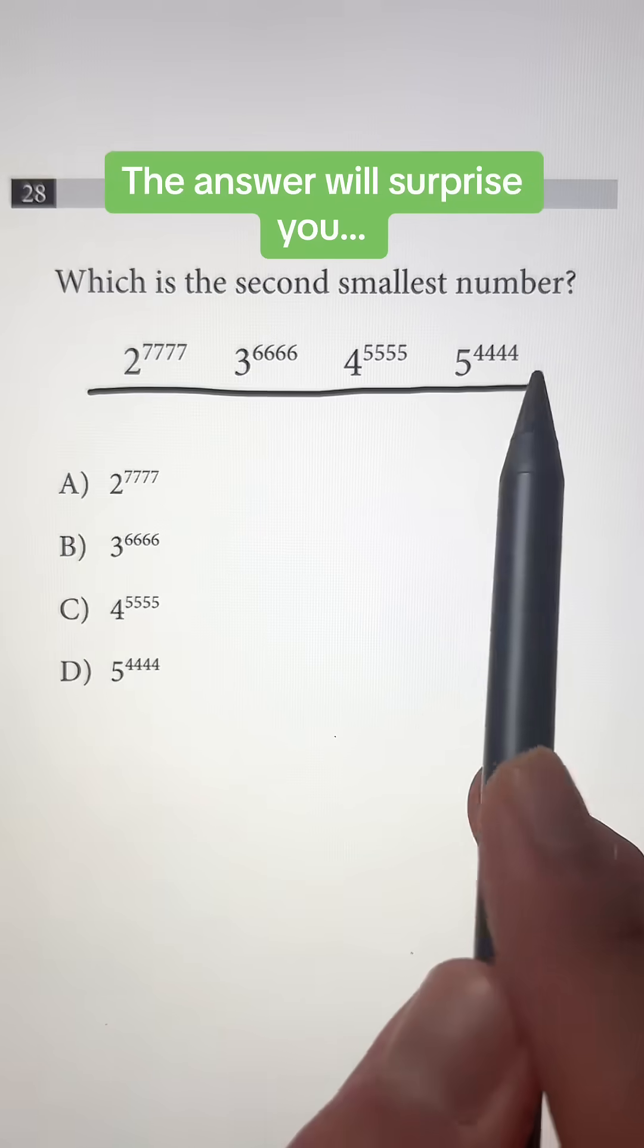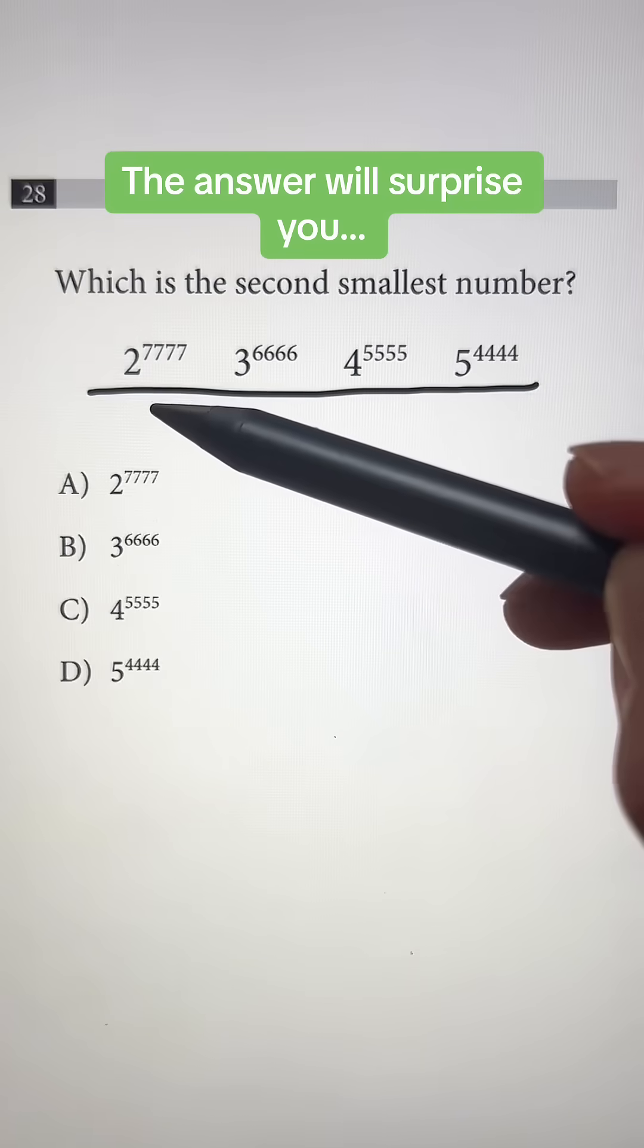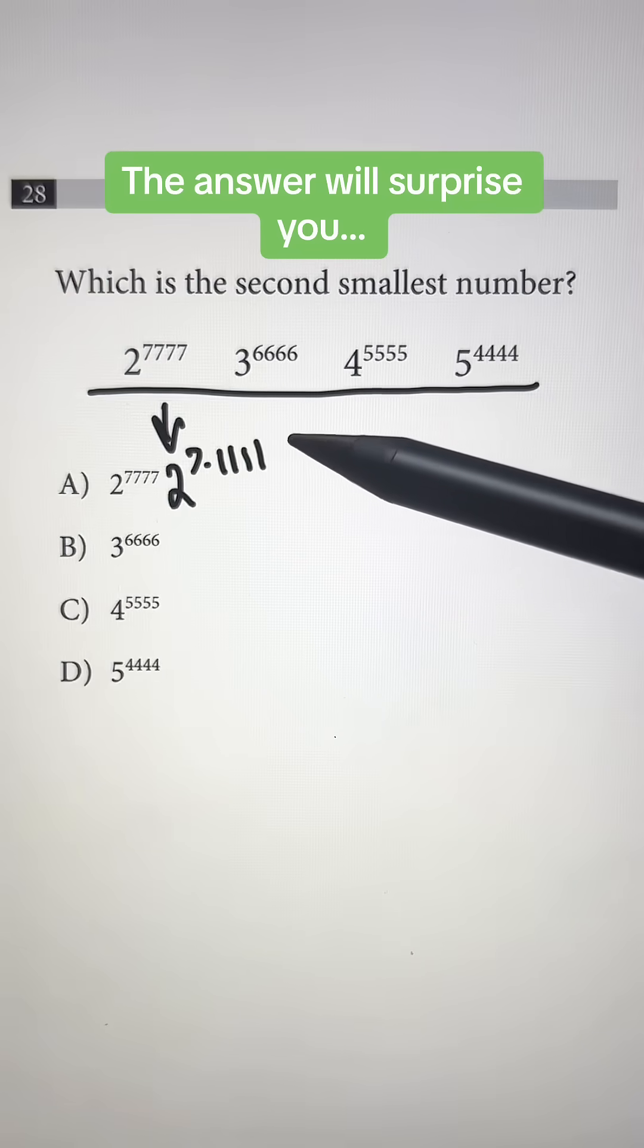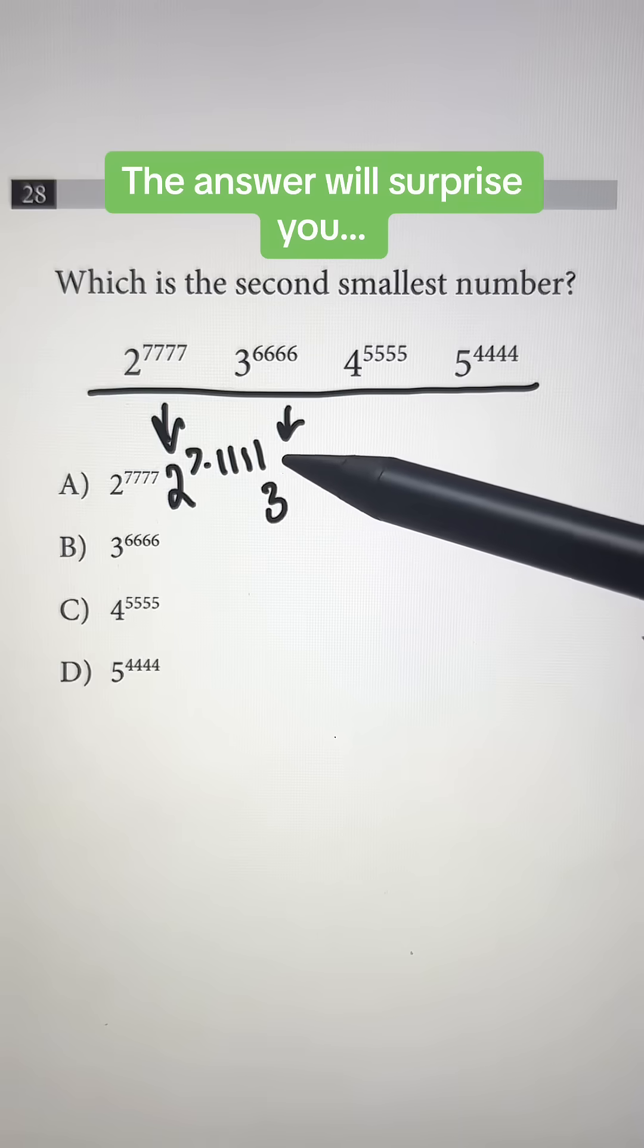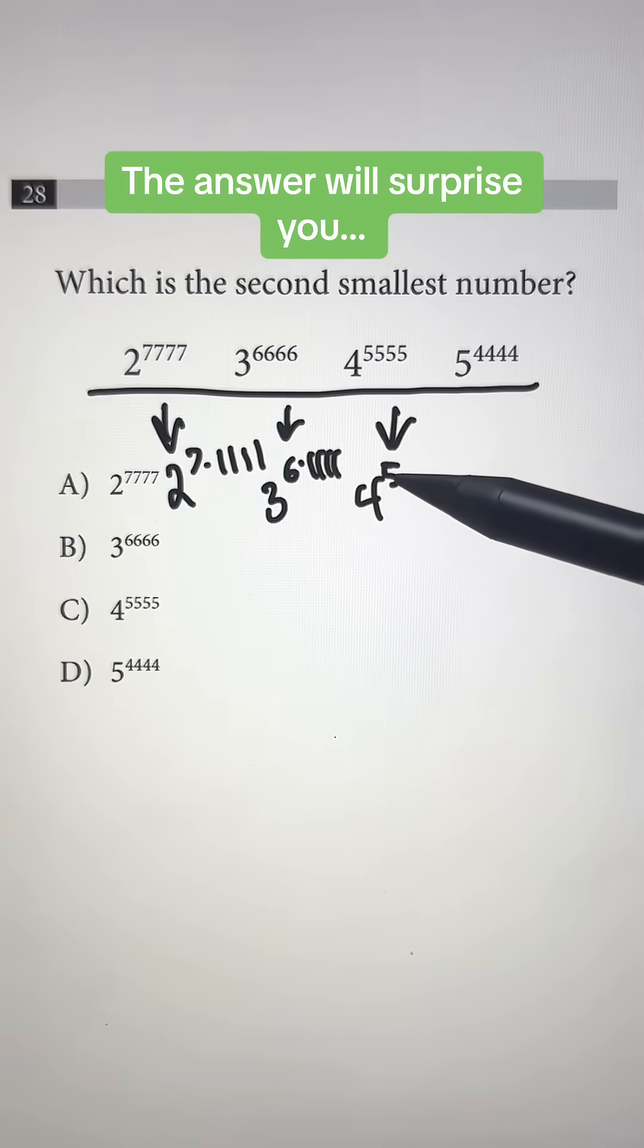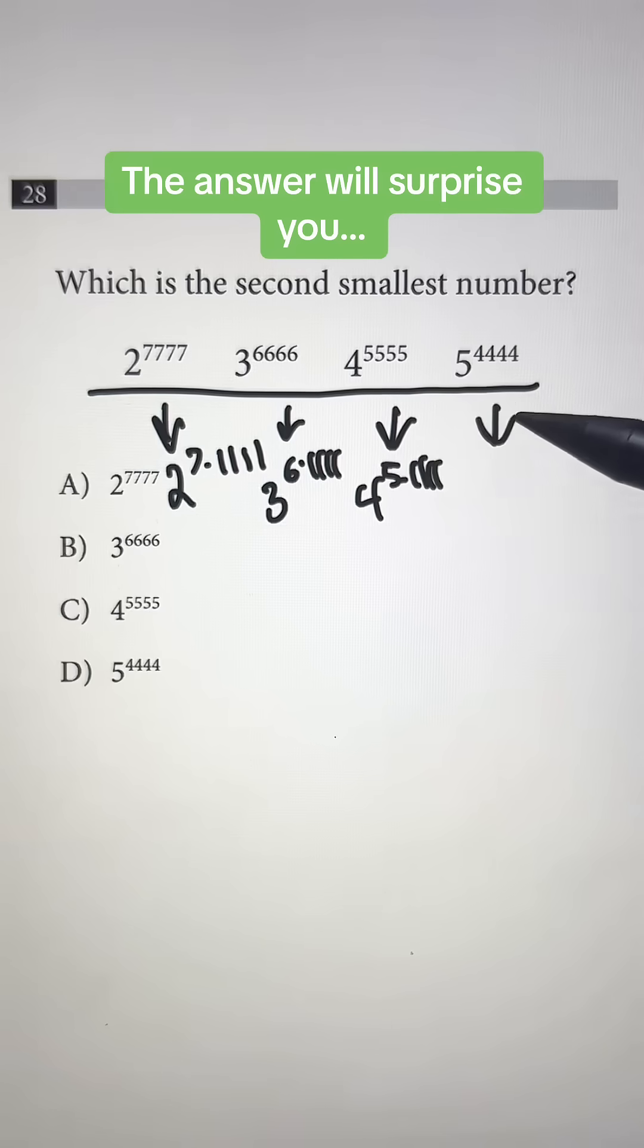Now these are too big to put in a calculator so I'm going to teach you how to simplify it. So this one we can break it down into 2 to the 7 times 1111 power. This one we can break it down into 3 to the 6 times 1111 power. This one we can do 4 to the 5 times 1111 power. And this one we can do 5 to the 4 times 1111 power.